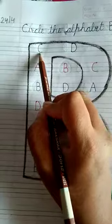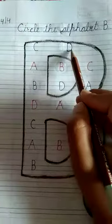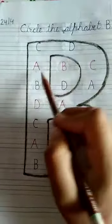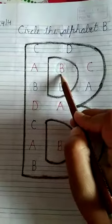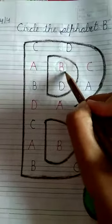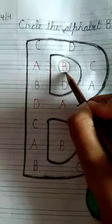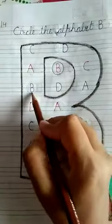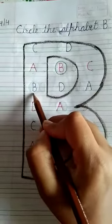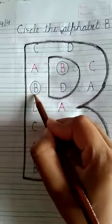Okay, what is this? C. This D. This A. And this B. Make a circle. Okay, this C. And this B. Make a circle.